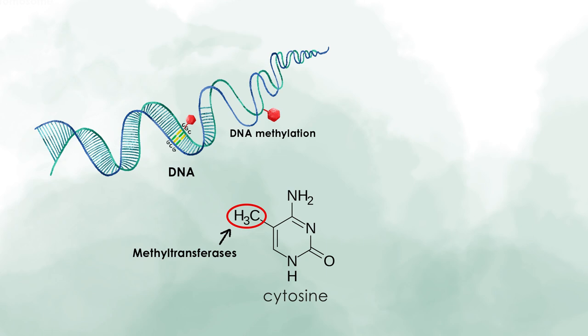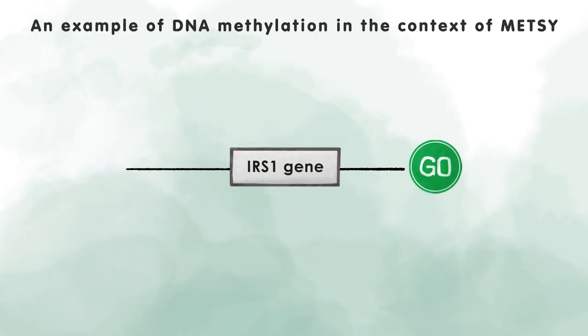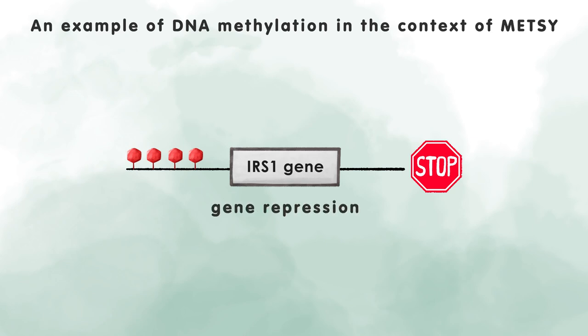As an example, in the context of the metabolic syndrome, we can mention that DNA methylation regulates genes involved in insulin signaling. Higher insulin receptor substrate 1 promoter methylation is linked to lower gene expression — that means it puts a stop to gene expression and represses the gene. This phenomenon was observed in adipose tissue of obese individuals.